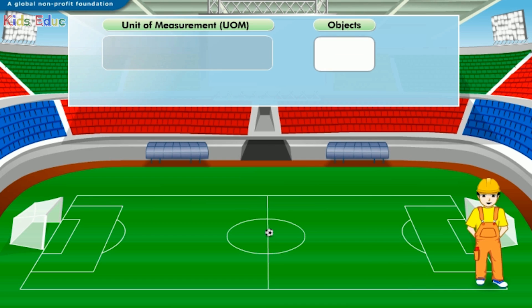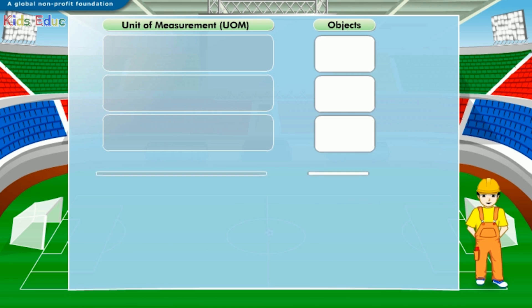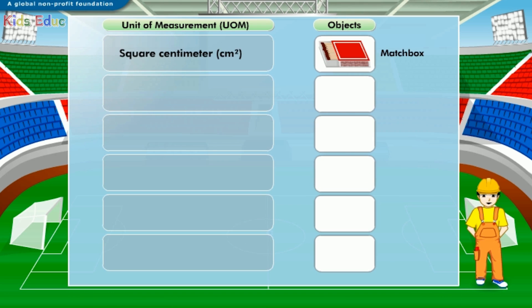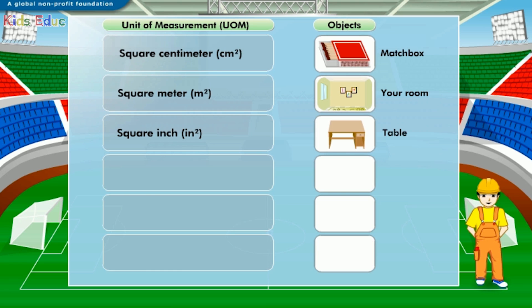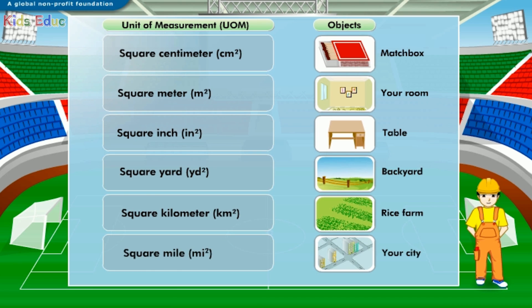You can use different units of measurement such as square centimeter, square meter, square inch, and square yard, depending on the object you wish to measure. The table displayed on the screen shows different units of measurement and some common objects you can measure with those units.